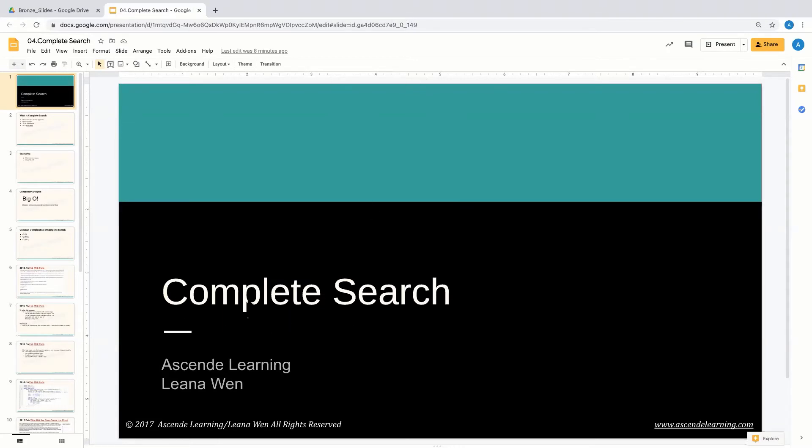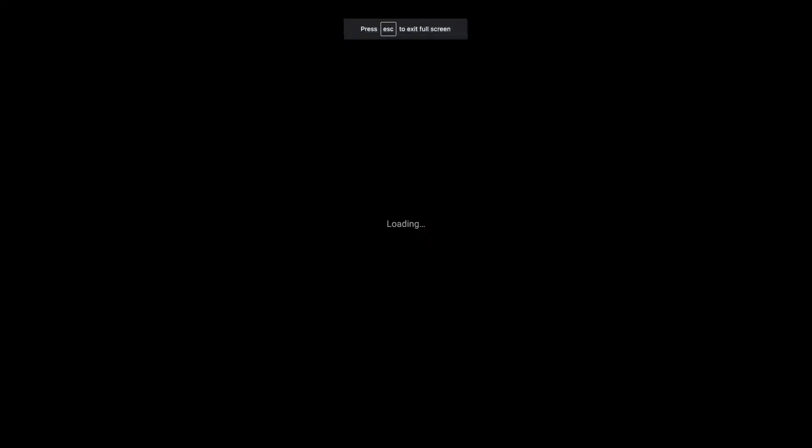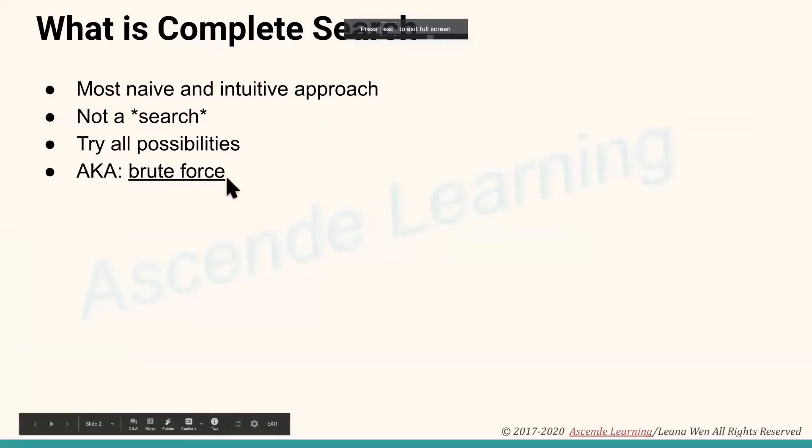So complete search, it basically means that you completely exhaust evaluating all the possibilities. So that's kind of what the complete comes from. Search, searching for a solution, searching for data. That's the meaning of this terminology, complete search.